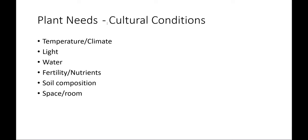The approach for this entire module is to look at cultural conditions broadly — temperature, climate, light, water, fertility and nutrients, soil composition, and overall space. We'll look at what those are, how we recognize them, how we identify which plants prefer which areas, and go into ways that professional horticulture modifies things or applies heavier inputs to get plants to grow for sale or for food.